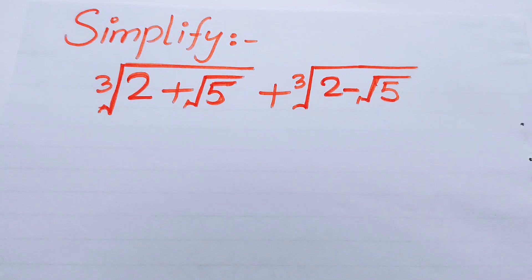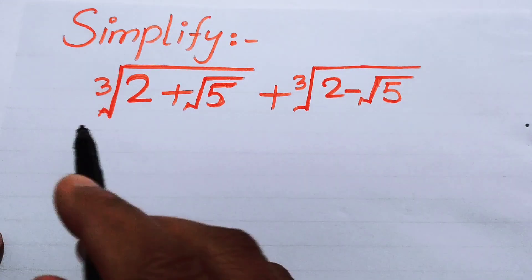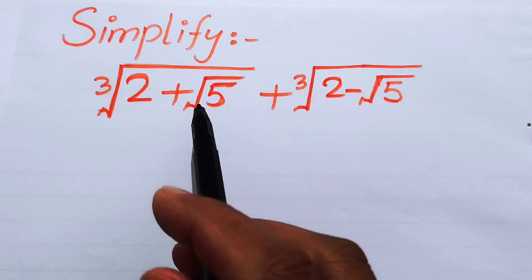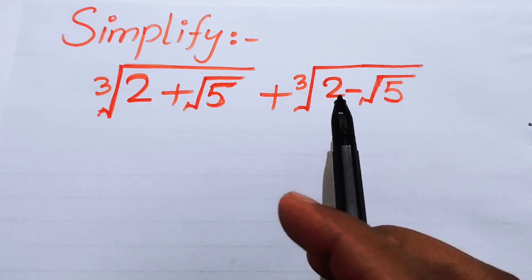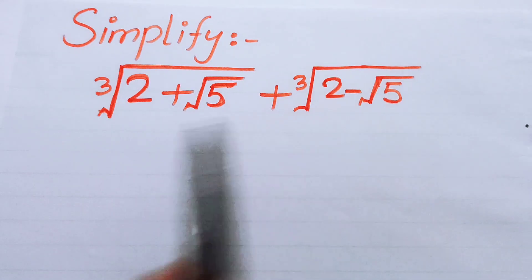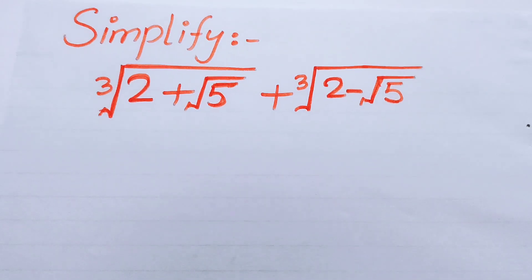Hello everyone, welcome back to the Map of Mathematics. In this video we are going to solve this nice math olympiad geometric problem. We have cube root of (2 plus square root of 5) plus cube root of (2 minus square root of 5), and we will simplify this expression.